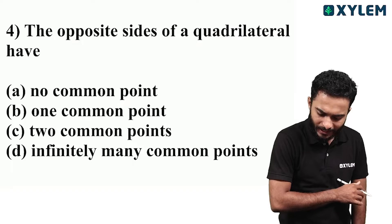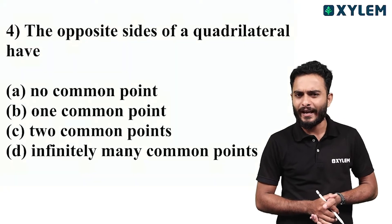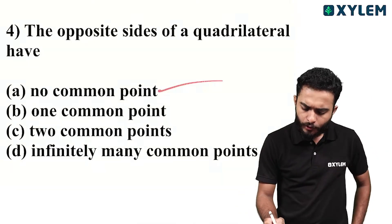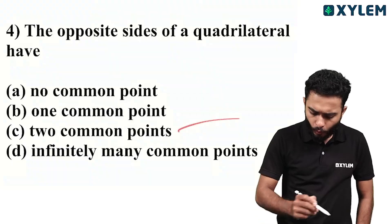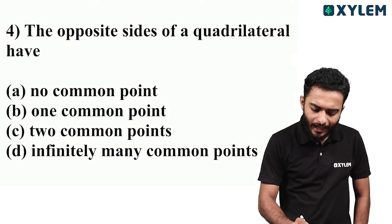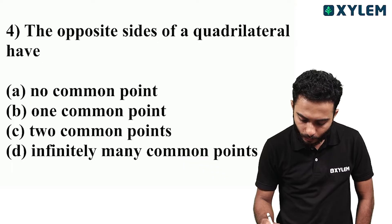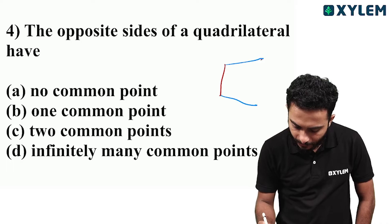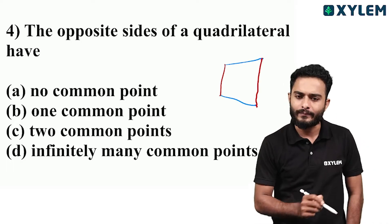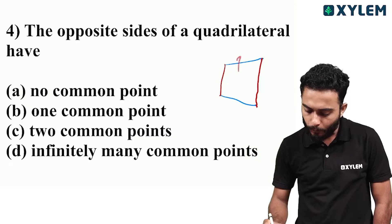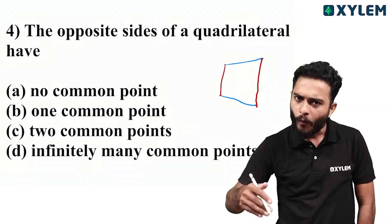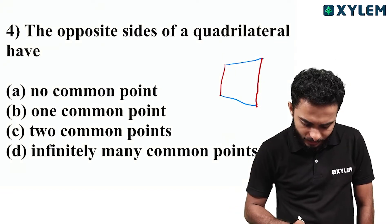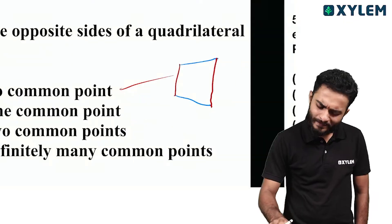The opposite sides of a quadrilateral have no common points. A blue or red answer is opposite sides — this red is opposite, this blue is opposite. Opposite sides are not common points. No common points — opposite sides are not common points. Correct.